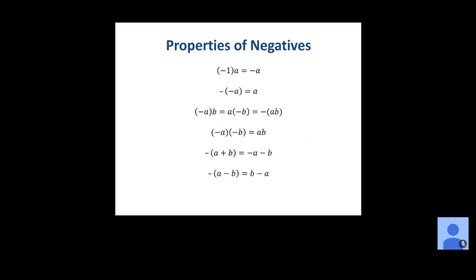Now some properties of negatives. Negative one times any real number gives the opposite of that number, negative a. A double negative becomes positive: negative negative a is just positive a. Multiplying a negative by a positive gives a negative result: negative a times b, or a times negative b, gives negative ab. Two negatives make a positive: negative a times negative b gives positive ab. We can also distribute a negative sign: negative(a + b) gives negative a minus b, and negative(b − a) gives negative a after distributing, which through the double negative is the same as b minus a.